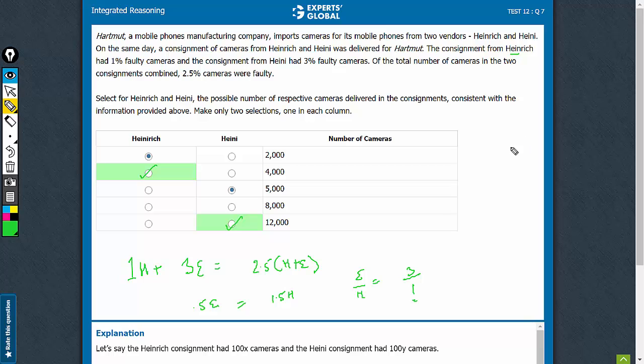The same question could have been solved through allegations also, a very important concept which saves time. The two qualities involved are 1% and 3%. The result is 2.5. The difference would be 1.5 here and 0.5 here, which turns out to be 1 to 3.